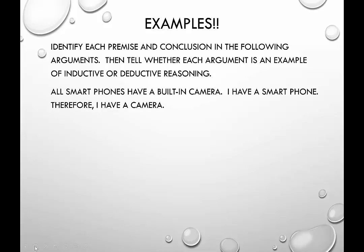Our first example: all smartphones have a built-in camera. I have a smartphone. Therefore, I have a camera. This one has two premises. Premise one is: all smartphones have a built-in camera. Premise two is: I have a smartphone. And the conclusion is: I have a camera.